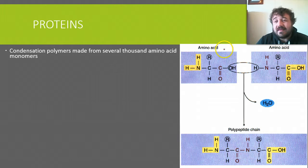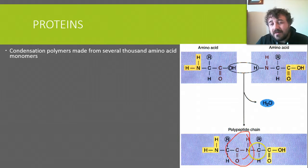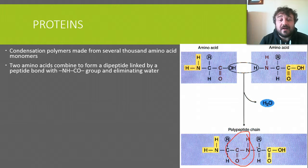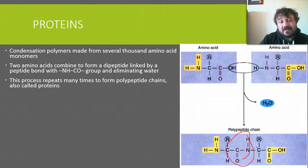Proteins are basically condensation polymers. We've got amino acid A and amino acid B; they join, they lose a water molecule, and this forms a peptide bond. This is becoming a peptide chain, but at the moment — because it's just the two of them — it is a dipeptide. Two amino acids combine to form a dipeptide linked by a peptide bond in the middle, eliminating water; hence condensation polymer. The opposite is hydrolysis — you use water to split it apart.